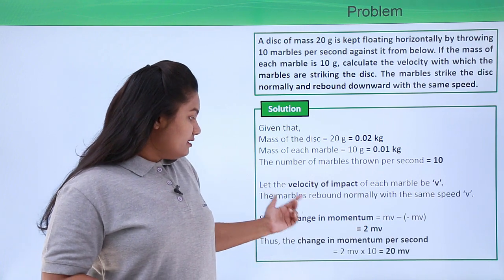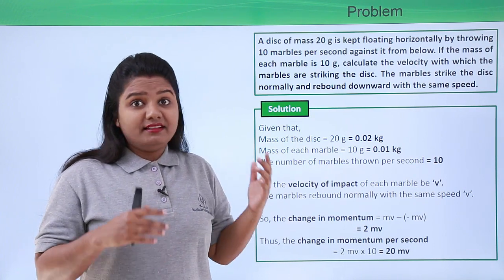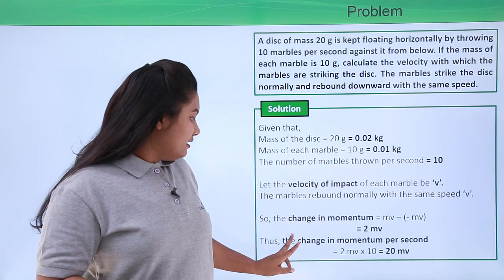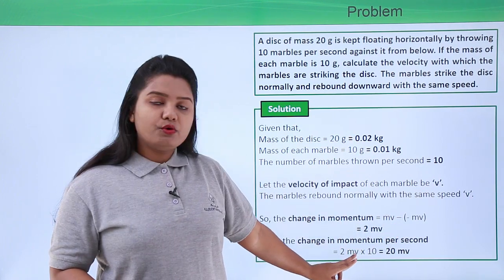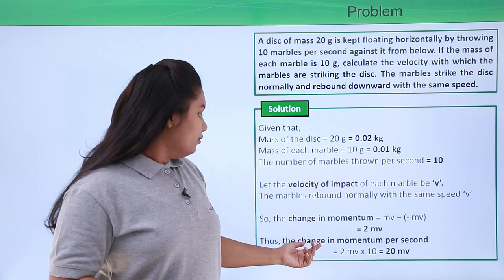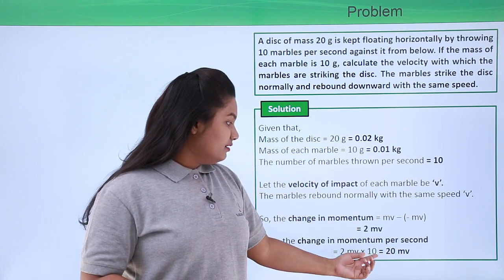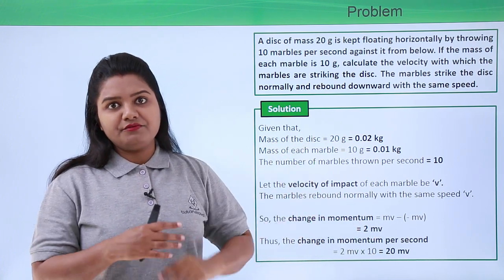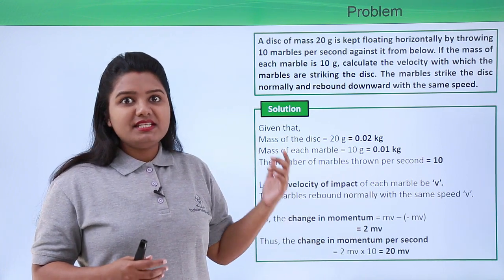Now the change in momentum per second: in one second there are 10 marbles which are thrown onto the disk from below, and therefore the change in momentum per second will be equal to the number of marbles thrown per second multiplied by the total change in momentum for one marble. So the change in momentum per second becomes 10 × 2mv = 20mv.